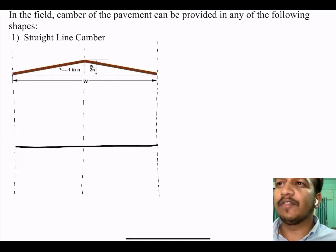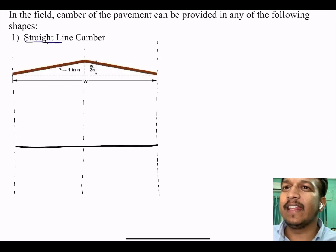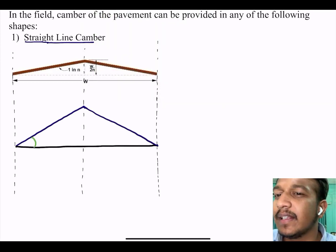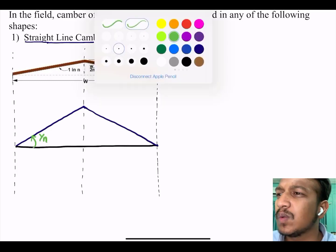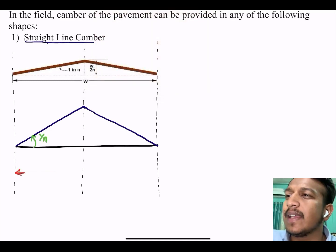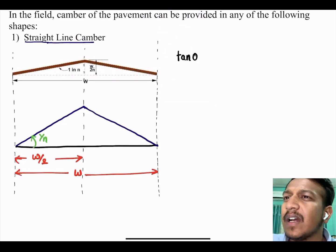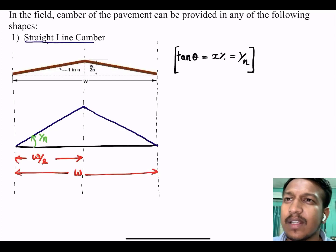In the field, camber of the pavement can be provided in any of the following shapes. First is straight line camber. If I will show, the slope is given as 1 is to 2n and width of the road is w. Half of the width is w divided by 2. Straight line camber is generally preferred for cement concrete pavement. tan θ is given as x percent which equals 1 by n.